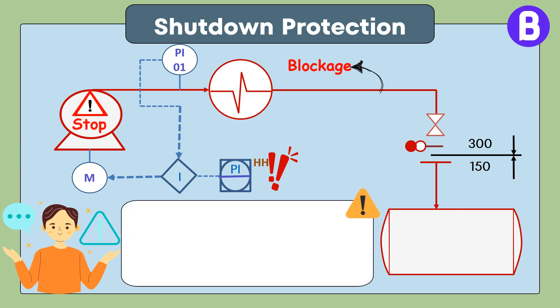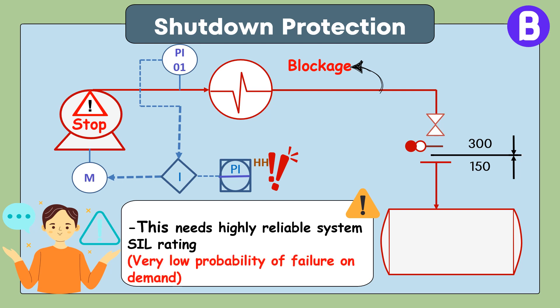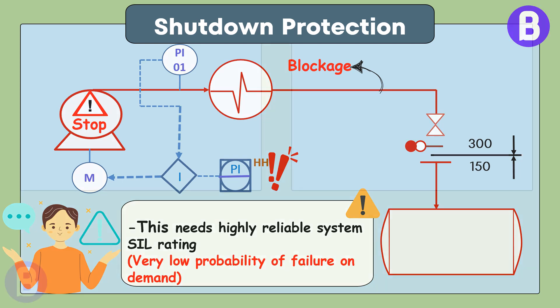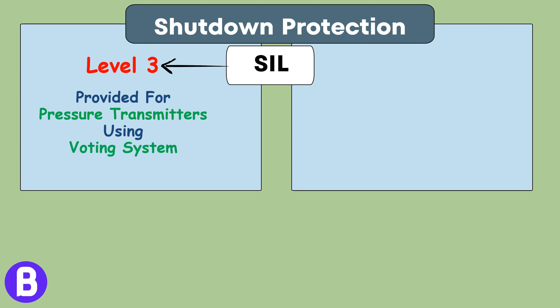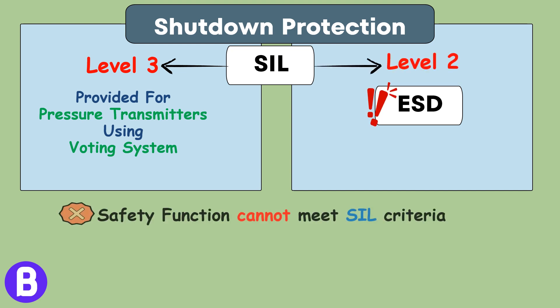Adding such protection would need a very reliable shutoff system with very low probability of failure on demand. In any safety integrity level assessment, this would need safety integrity level 3 protection. Although SIL 3 can be provided for pressure transmitters using a voting system, the existing emergency shutdown system was rated at SIL 2. This means the safety function cannot meet the criteria and is not reliable protection.